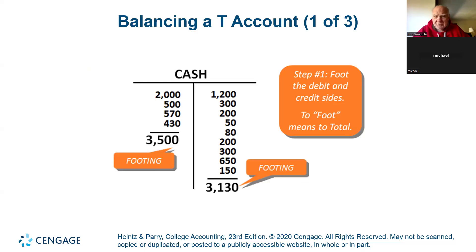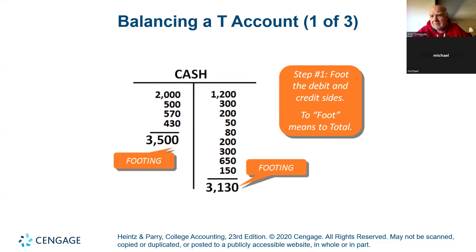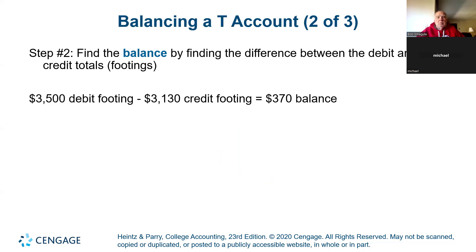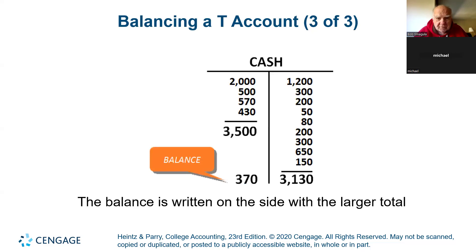Your auditors came in and said, how much cash do you have at the end of the month? What we're going to do is add the debits, add the credits, and the difference — which in this case is $370 — will be the balance. That's called footing. You're just adding the debit and credit sides down and the high man wins — the higher number is where the balance goes. We find the balance by taking the difference between the two footings: $3,500 minus $3,130 in credits leaves a balance of $370.